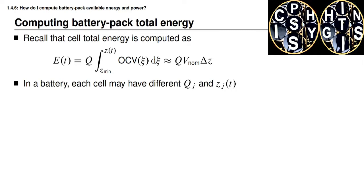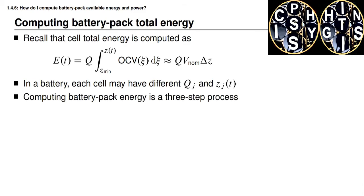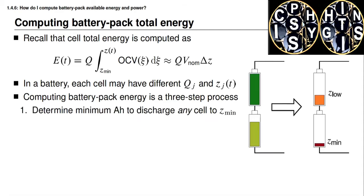When computing total energy for a multi-cell battery pack, we have to remember that every cell could have a different total charge capacity and a different present state of charge. So computing battery pack available energy is a three-step process. First, we determine how much charge could be removed from the battery pack before any cell encounters its minimum state of charge.